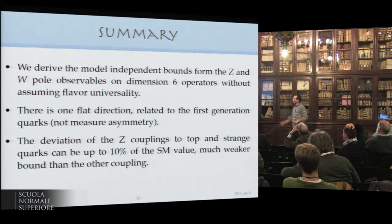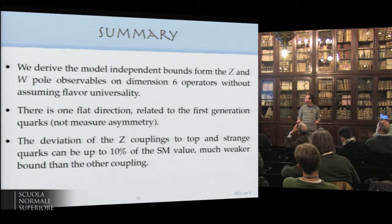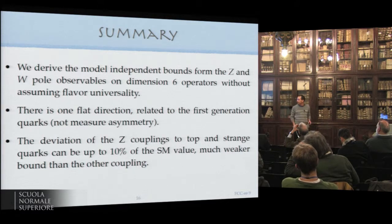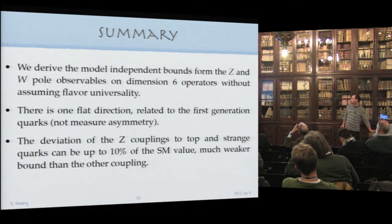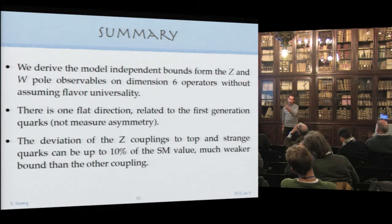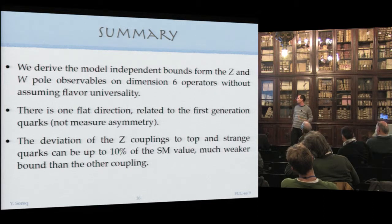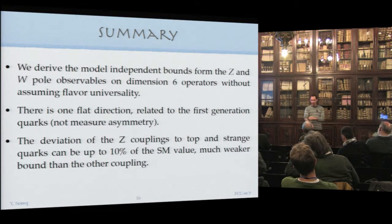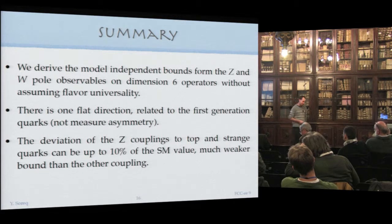There are a lot of relevant works. I hope I included most of the relevant references here. To summarize, we derive model independent bounds from the Z and W pole observables on dimension six operators without assuming flavor universality. There is one flat direction related to the first quark generation. The deviation of Z couplings to top and strange quarks can be up to 10% of the standard model value, much weaker than bounds on other couplings. The interplay with different flavor observables is interesting and we need some alignment mechanism.